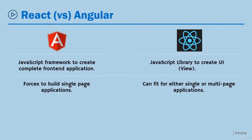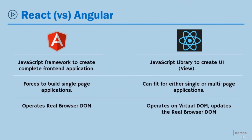Angular directly operates on the real browser DOM — when you update a property value in Angular, it is directly reflected in the real DOM. But in React, it works based on the virtual DOM. Every time you make updates in the virtual DOM, React compares the virtual DOM and the real DOM and updates the real DOM only for the specific change, instead of overwriting the complete DOM. This makes React applications work faster.